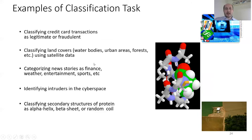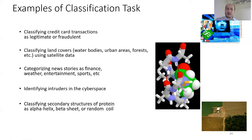Other examples include classifying credit card transactions as legitimate or fraudulent, classifying land covers like water bodies, urban areas, and forests using satellite data, categorizing news stories as finance, weather, entertainment, or sports, identifying intruders in cyberspace, or classifying secondary structures of proteins as alpha helix, beta sheet, or random coil.